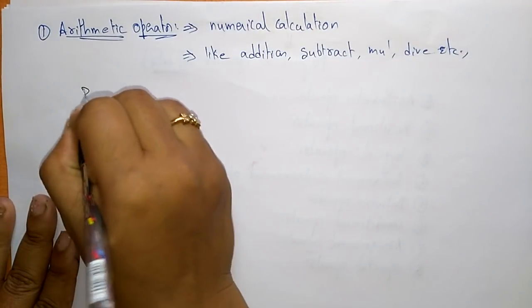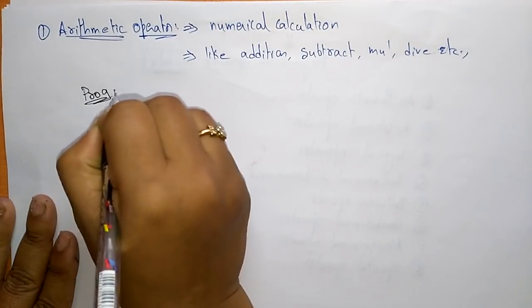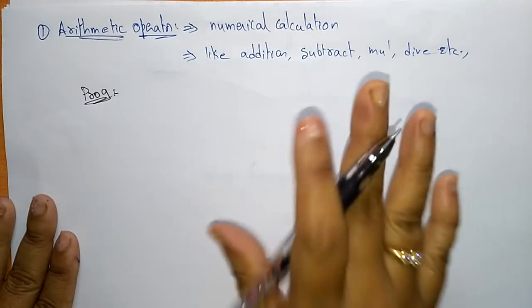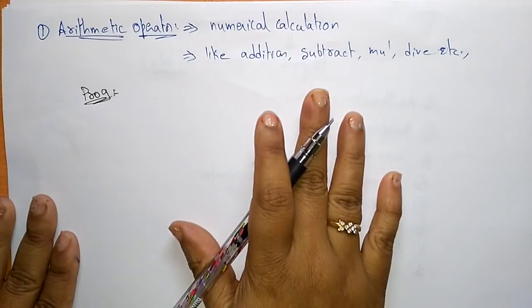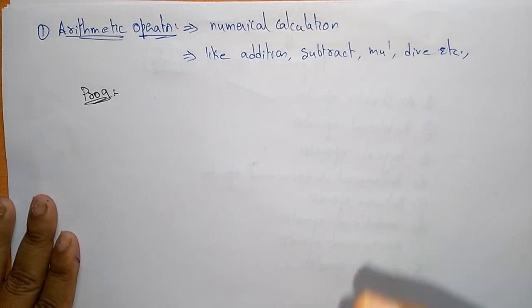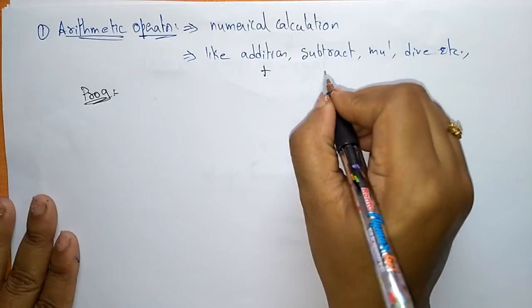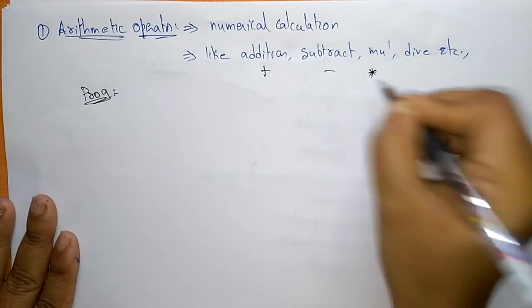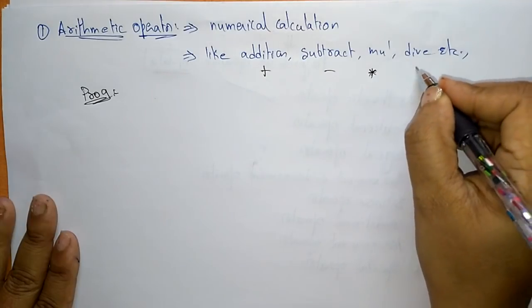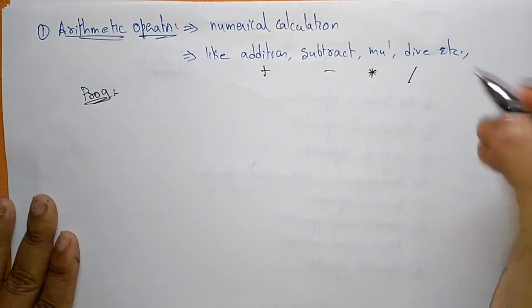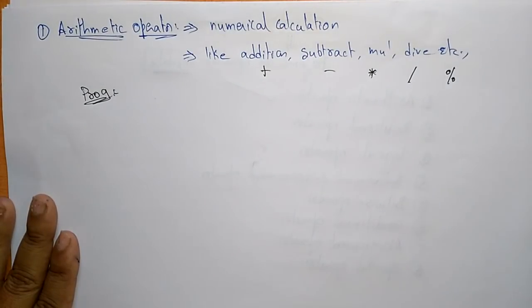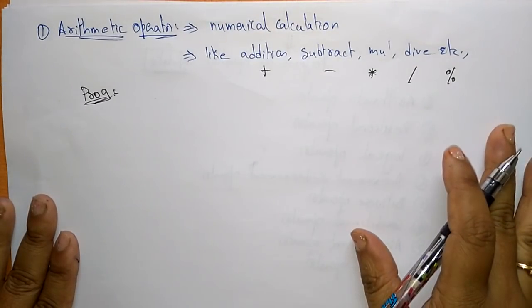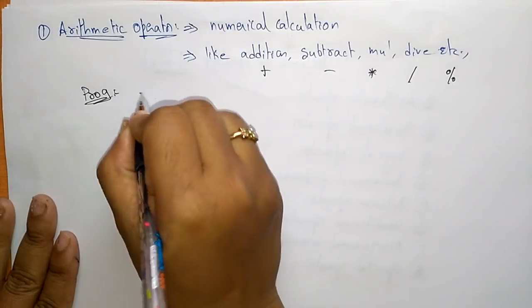The arithmetic operators used are: plus for addition, minus for subtraction, star symbol for multiplication, slash for division, and percentage for modular division. These are the operators you use to perform numerical calculations. Let me write the program for this.